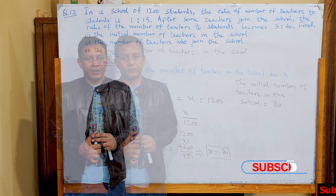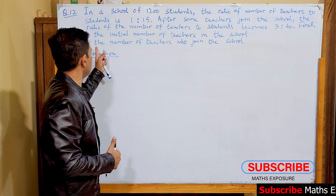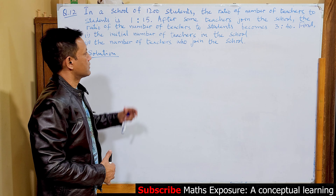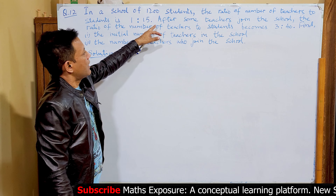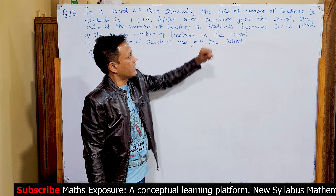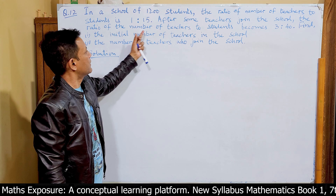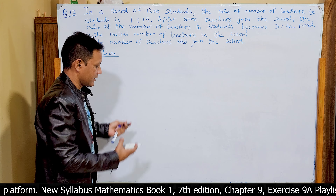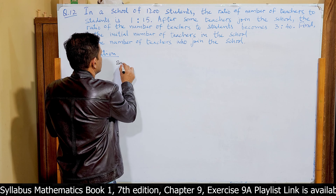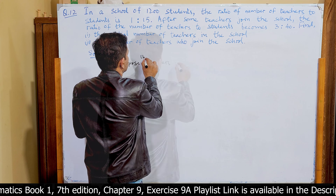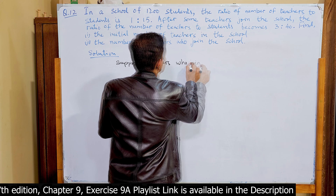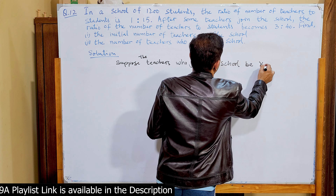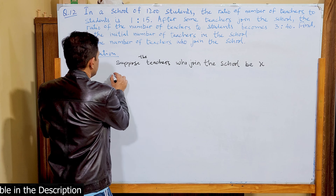Now let's move to Part 2: find the number of teachers who joined the school. After some teachers join the school, the ratio of teachers to students becomes 3:40. We suppose the number of teachers who join the school is x.